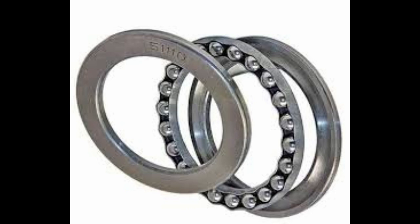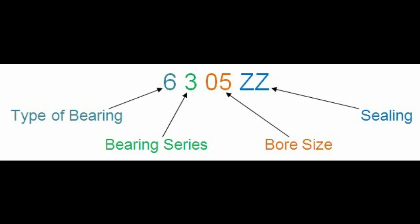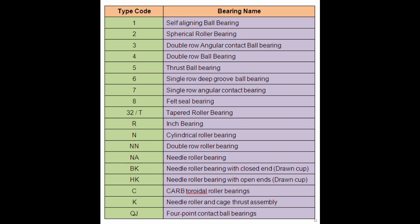There are a few companies which use their own separate identifying nomenclature. However, most of them follow a common standard for bearing nomenclature, which covers: types of bearings and their code, bearing series and their code, bore size of bearing, shielding, sealing, and specialty of the bearing.